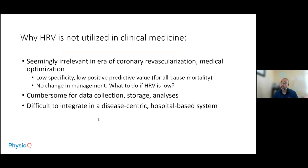It's also difficult to integrate heart rate variability into a disease-centric, hospital-based system. Heart rate variability is much more of a positive health marker, and medicine is not really designed to address a positive marker — we're very much focused on diseases. Additionally, it's hard to acquire this in an outpatient setting and it's not reimbursed by insurance companies.